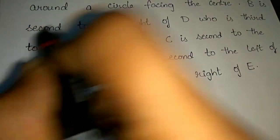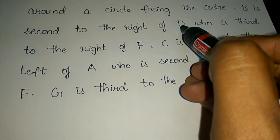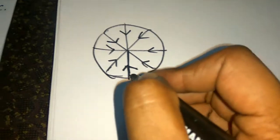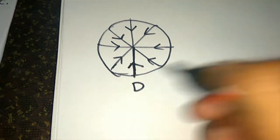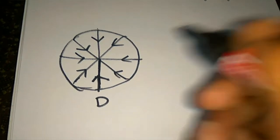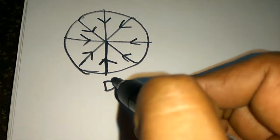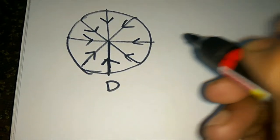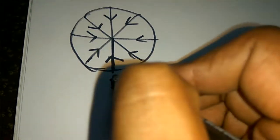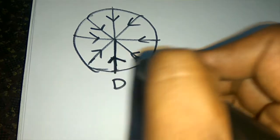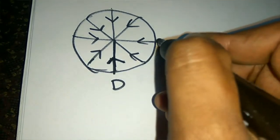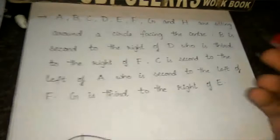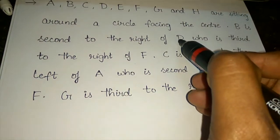First clue: B is second to the right of D. So starting from D, the right side — first right, second right — that position is B. B is second to the right of D. We mark D and place B at the second position to D's right on the circle.